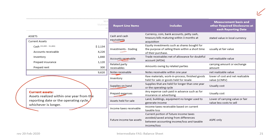For all current asset items except future income tax, there is no difference in treatment between ASPE and IFRS. Under ASPE, the current portion of future taxes is reported as current assets, whereas under IFRS all deferred tax amounts are reported as long-term assets or liabilities. Also note that ASPE refers to deferred taxes as future income tax, while IFRS uses the term deferred income tax.